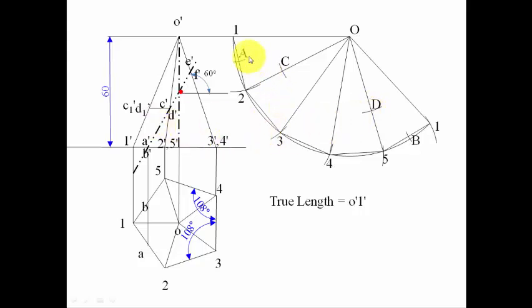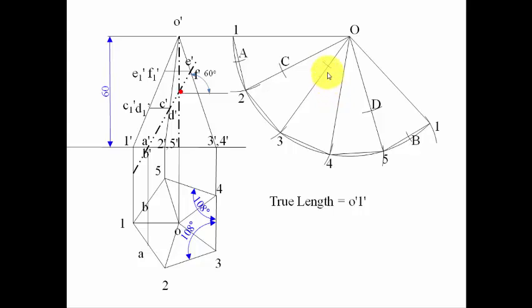Points E and F don't lie on the true length, so they have to be projected towards the true length until they intersect it at E1 dash and F1 dash. Keep one leg of your compass at E1 dash and with O as center put an arc — that's point E on slant edge O3. Repeat the same step for F — one leg at F1 dash, with O as center put an arc on slant edge O4 — that's point F.